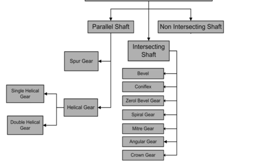Intersecting shaft gears are classified into the following groups: bevel gear, coniflex bevel gear, zerol bevel gear, spiral gear, miter gear, angular gear, and crown gear.